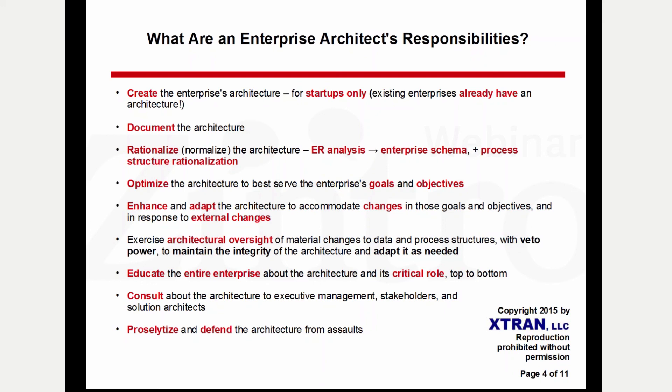The enterprise architect should be exercising architectural oversight of any material change to the architecture, or anything that affects it, and that must be with veto power — because otherwise it doesn't have any teeth. This architectural oversight is necessary to make sure that the architecture is not compromised. Architectures are constantly under attack from within the enterprise by special interests and people who see things differently, and the enterprise architect has to defend the architecture from that.